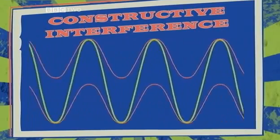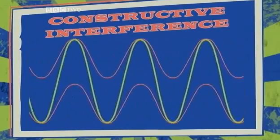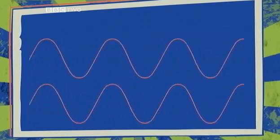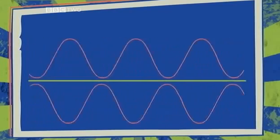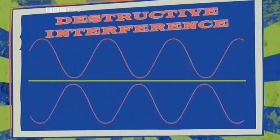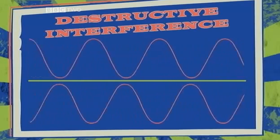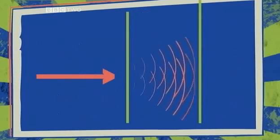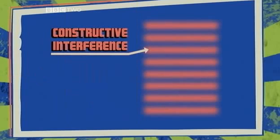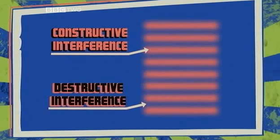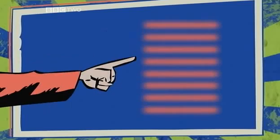But interference isn't always constructive. If the waves arrive out of step, they can cancel each other out — that's called destructive interference. So with light diffracting from two sources, we get lines of constructive interference — the bright areas — and destructive interference — the dark areas. These are the stripes we can see on the screen.